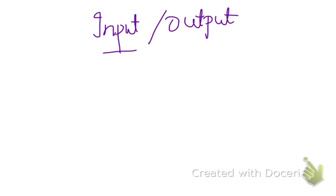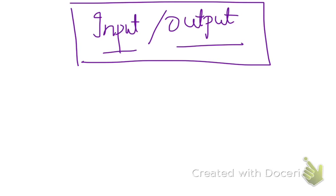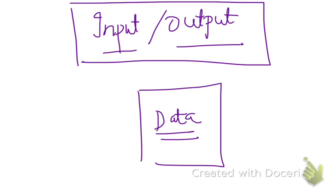So for any system, which includes a PLC system, we need an input and output. At least one input and an output. A normal data processing computer that we use, for example Excel, PowerPoint and applications like that,